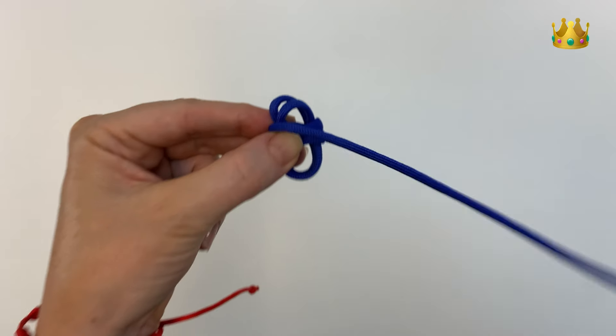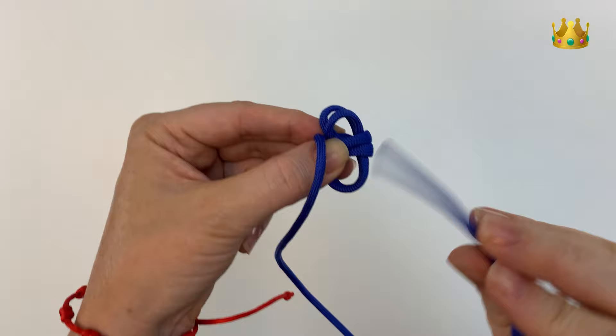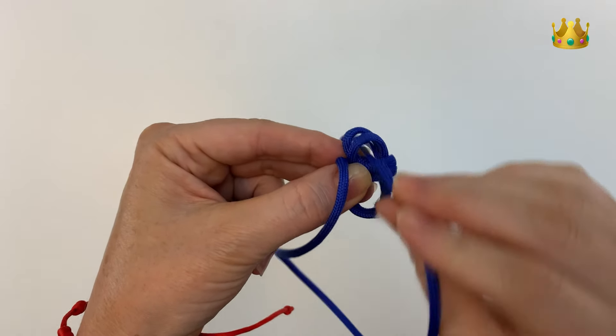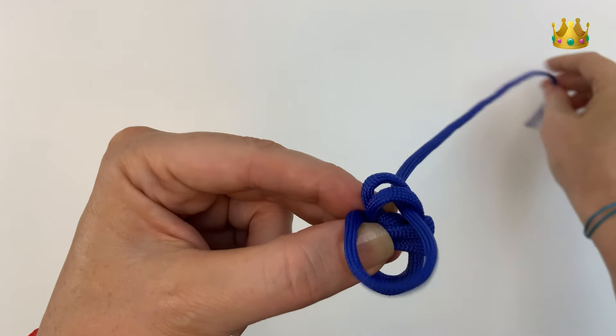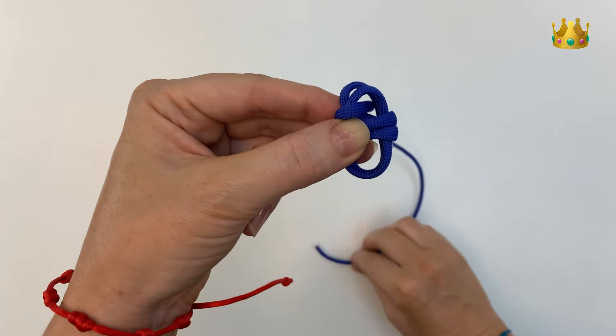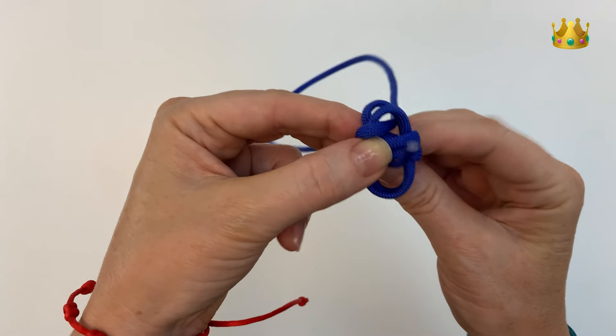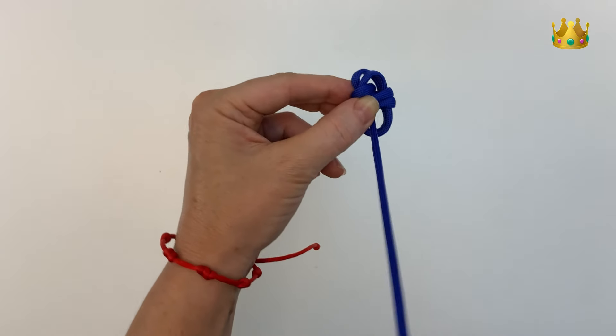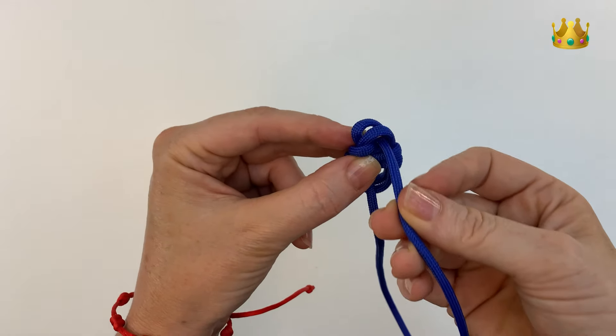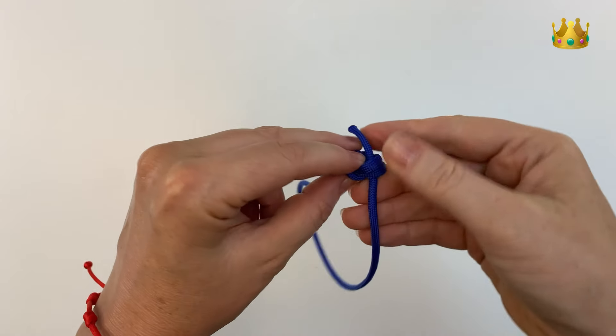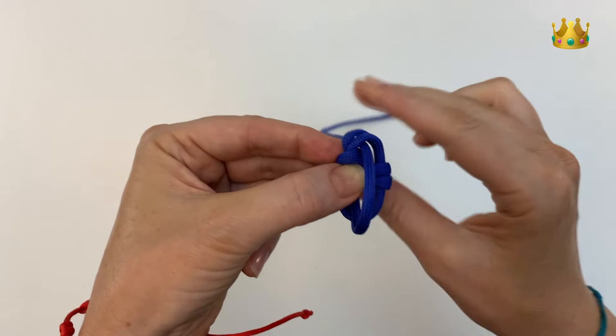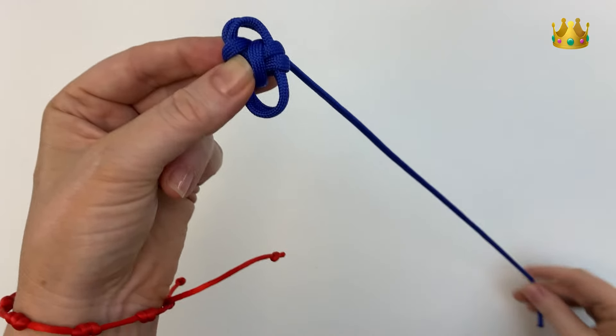Now we're going to take our cord and place the end down the top loop, and do our two layers going up and down. So bringing it up the bottom loop, back down the top loop, and then back up the bottom loop.